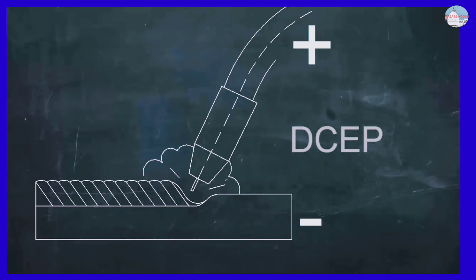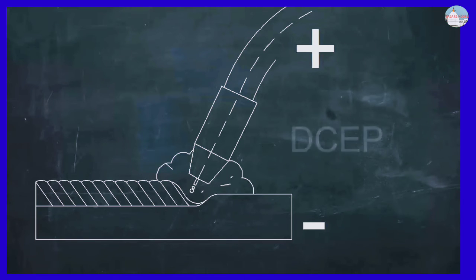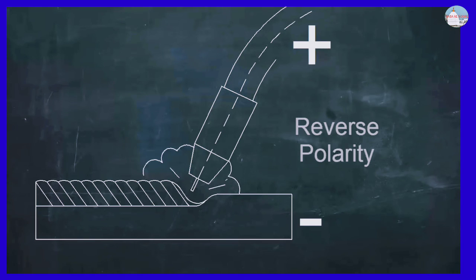The term DCEP is used, indicating that the current is direct current and the electrode is positive. This is also called reverse polarity, but DCEP is a more descriptive term.